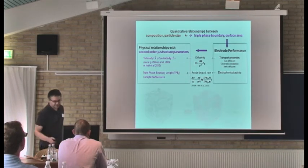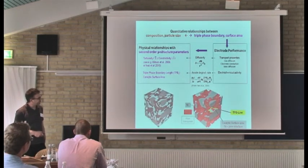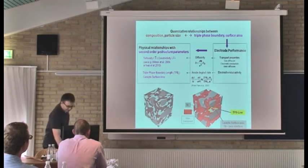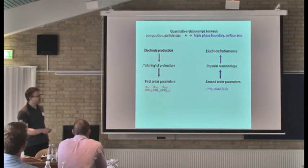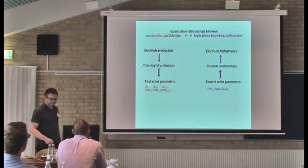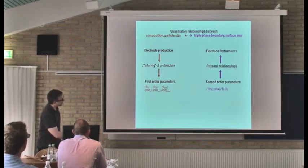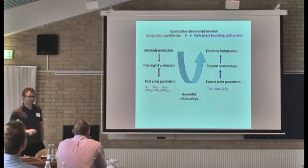There are new techniques — we have heard a lot about FIB tomography mainly — how we can extract these higher-order parameters. The idea is: there are the parameters where we have more or less direct influence, and there are the ones which have a direct influence on performance. So if we can establish quantitative relationships between those two groups, we get a more direct influence from production on performance. That's the idea of this presentation.